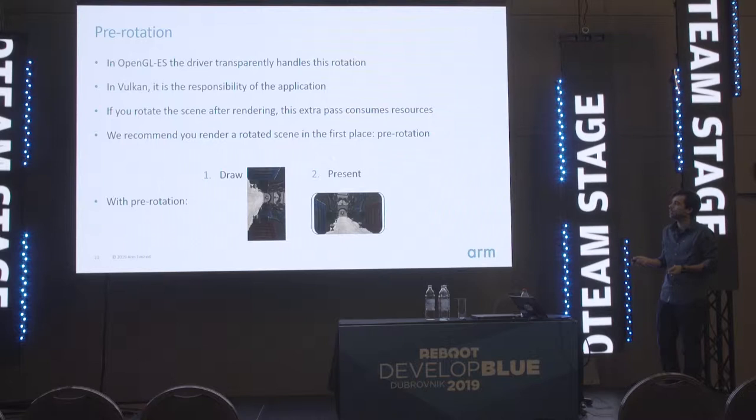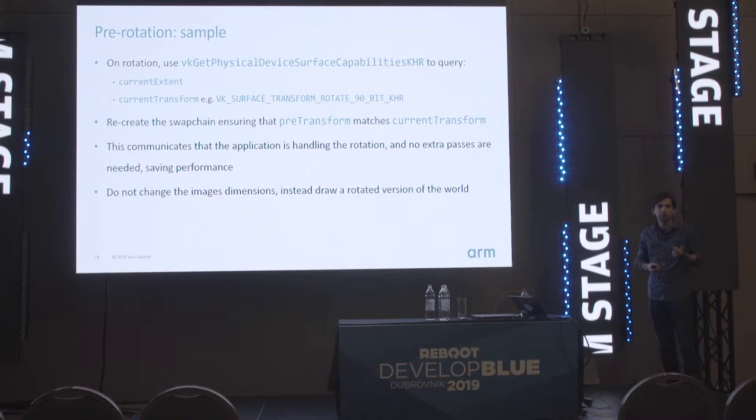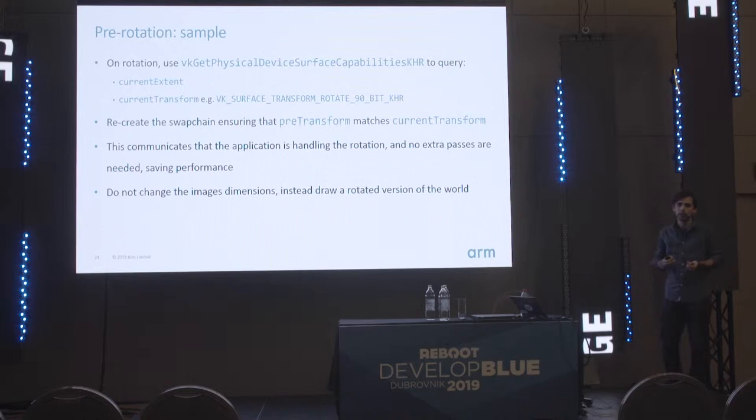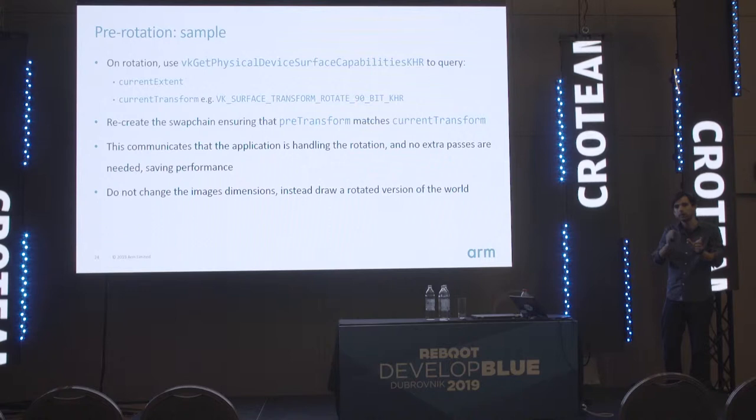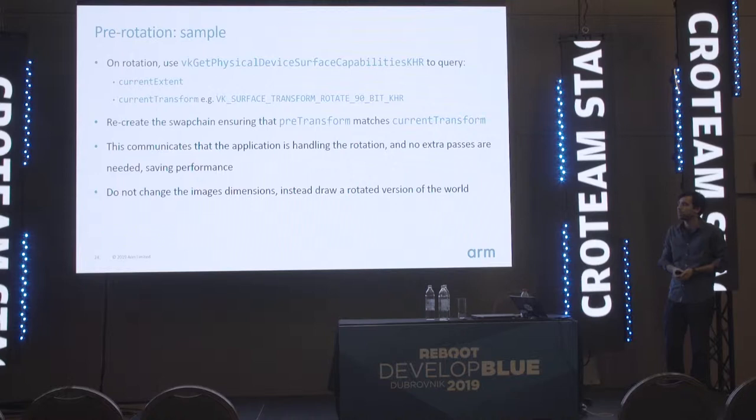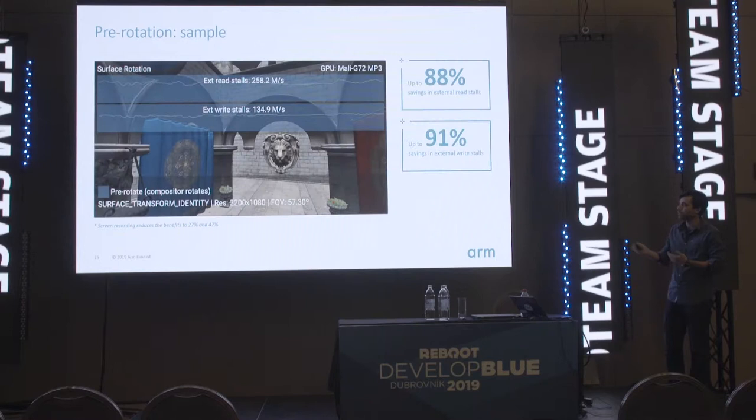In code, it is a matter of monitoring the orientation of the surface. When you are acquiring a new image, you can detect a swap chain out-of-date error. When you recreate the swap chain, you just need to ensure that the pre-transform value in the swap chain matches the current transform value of the surface. By doing this, you communicate to the compositor that the application is taking care of the rotation, and nothing further is needed.